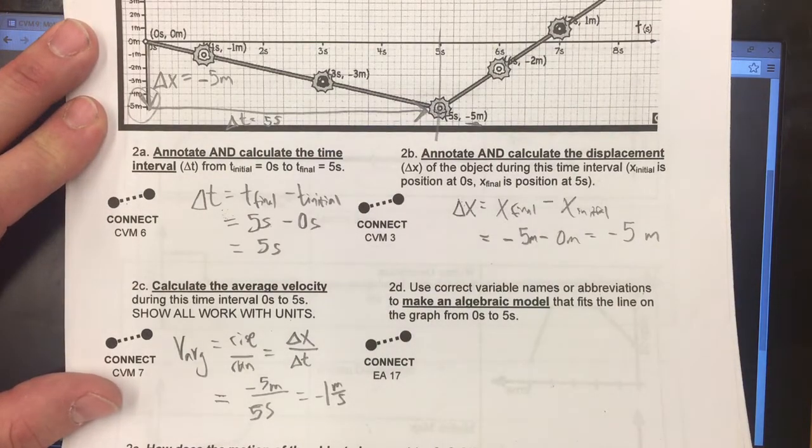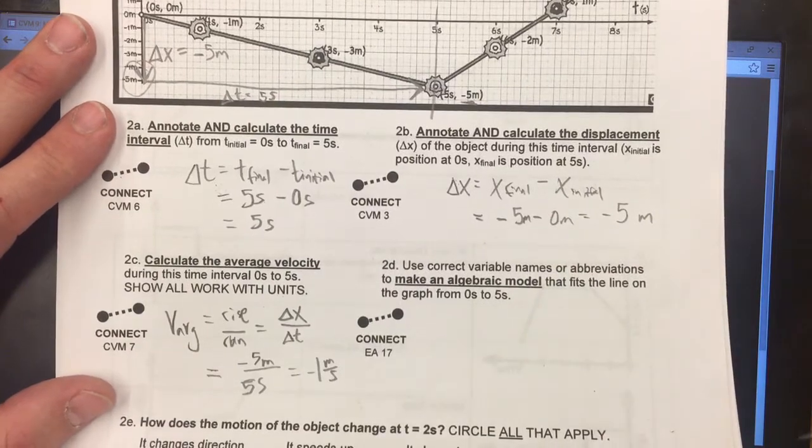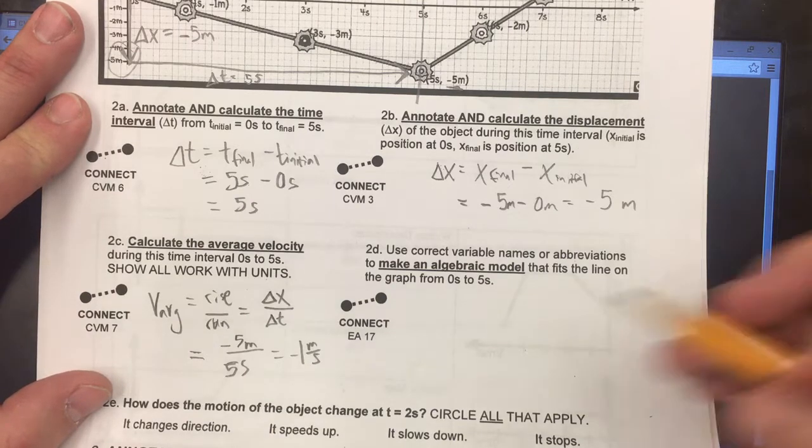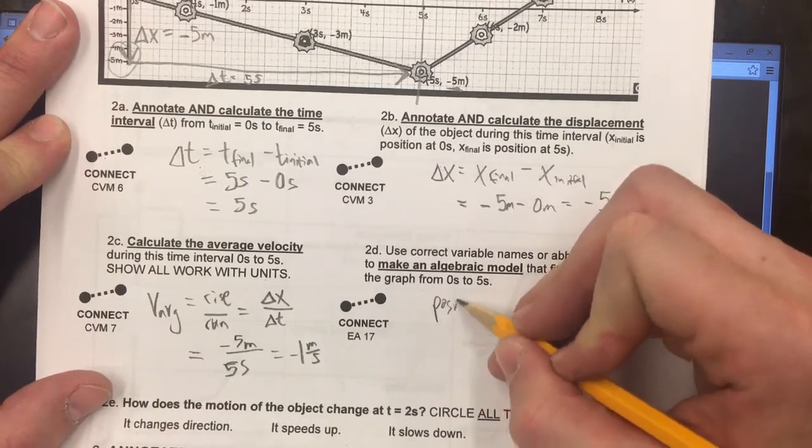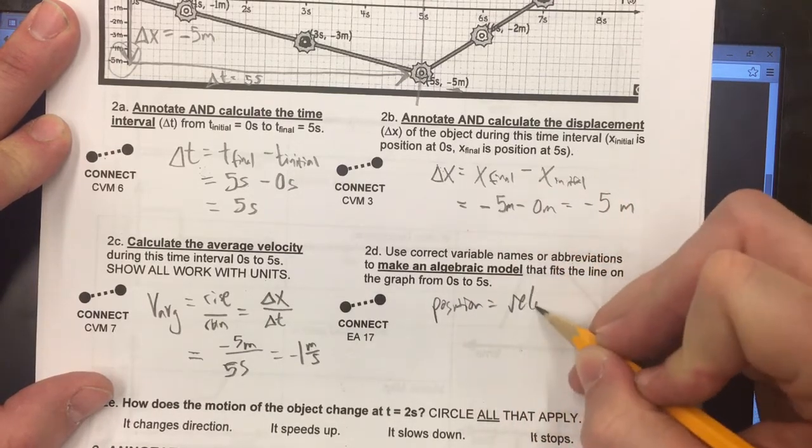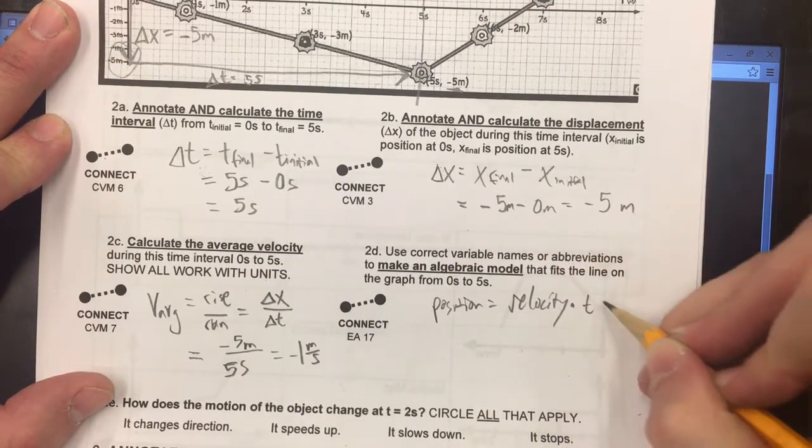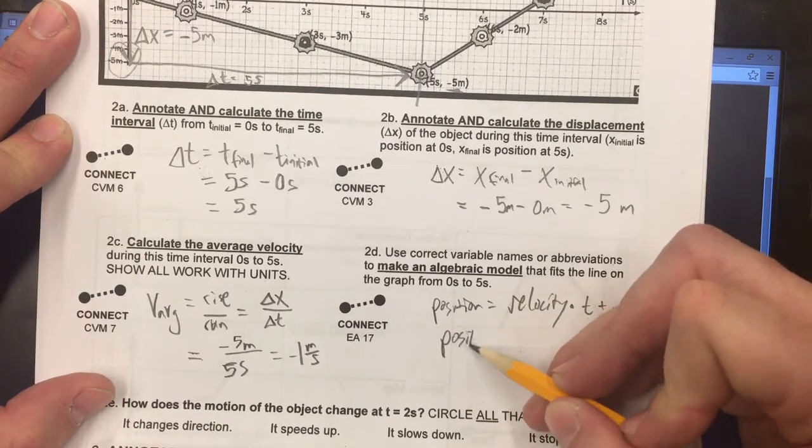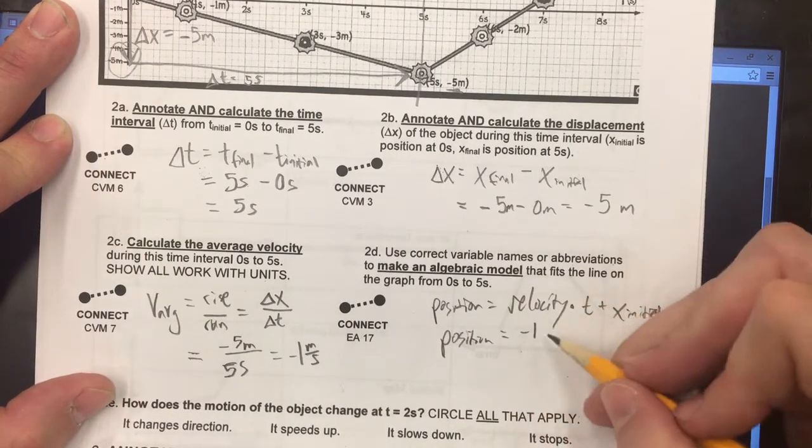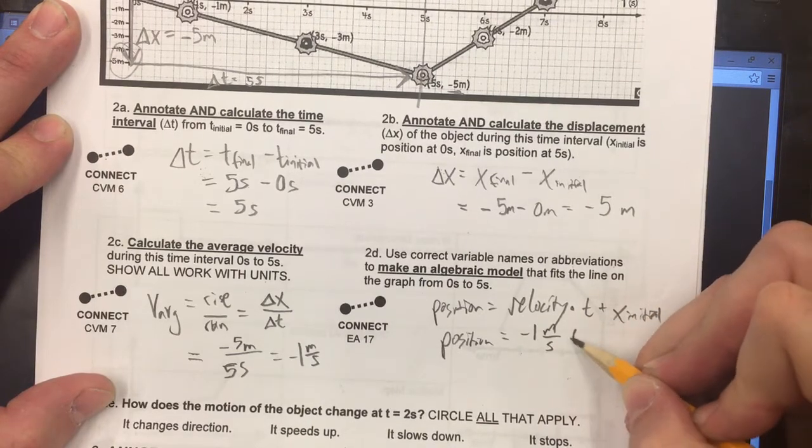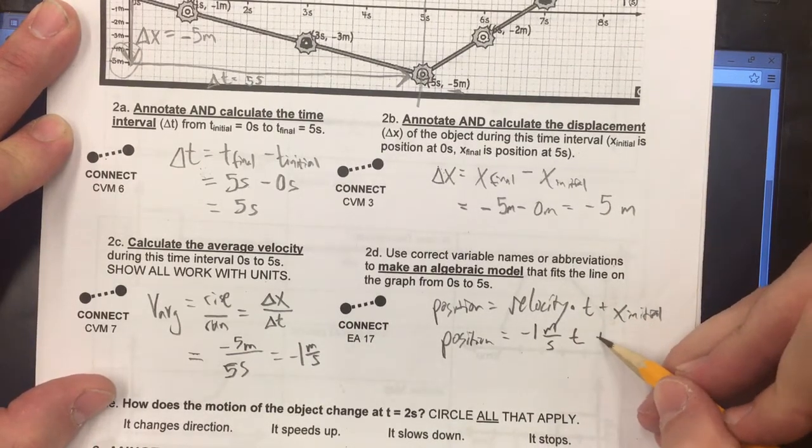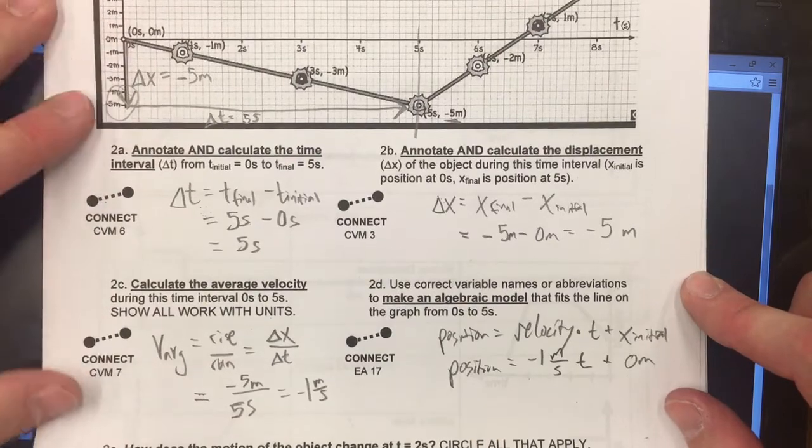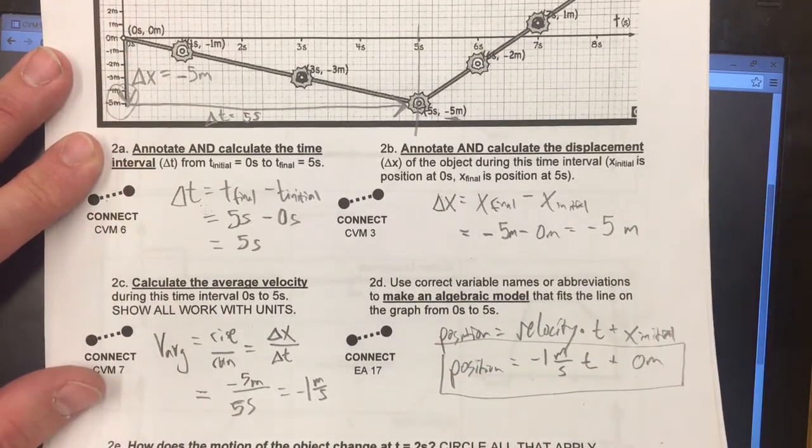Last thing we want to do is make an algebraic model to actually fit this using the things that you're just looking at on that homework. We want to use our initial position and our velocity to fit something that looks like this: position equals velocity times T plus X initial. In this particular case, the velocity as we know is negative one meter per second. We're going to leave T as a variable and we'll add zero meters. You can actually leave this off if you wanted to, but notice my initial position for this is going to be zero meters. That is the algebraic model that I need.